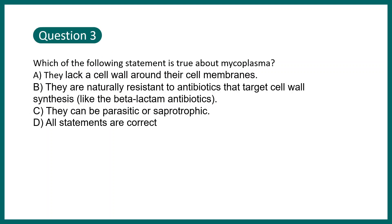Question 3: Which of the following statements is true about mycoplasma? Options: they lack a cell wall around their cell membranes; they are naturally resistant to antibiotics targeting cell wall synthesis like beta-lactam antibiotics; they can be parasitic or saprophytic; or all statements are correct. If you guessed it correctly — all of these statements are actually correct. Click the i button to revise more about mycoplasma quickly.